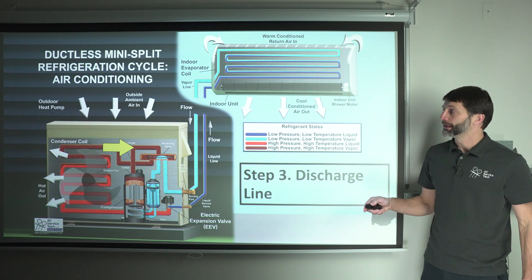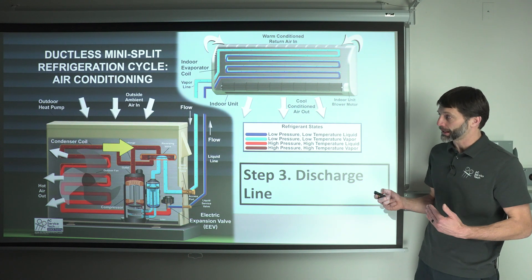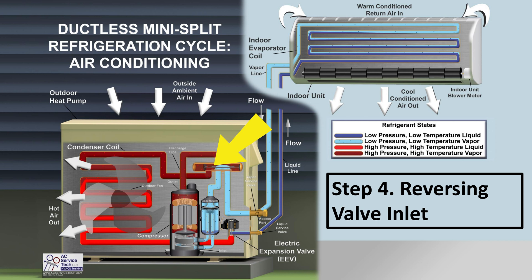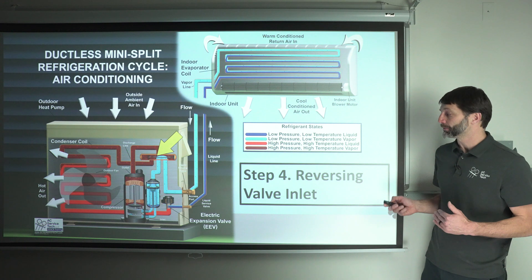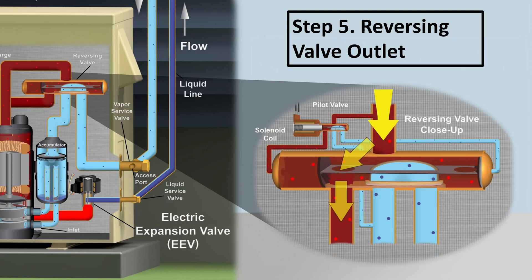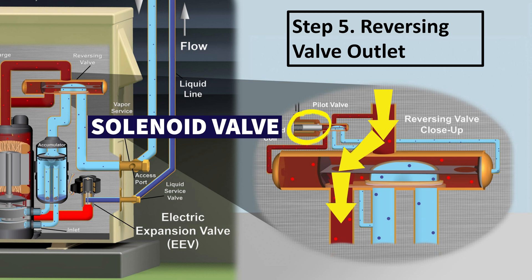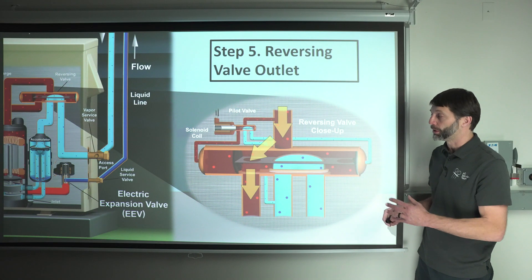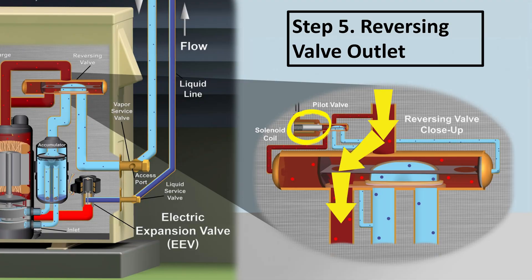The hot discharge gas travels into the reversing valve and remains unchanged — it's still traveling through the body of the reversing valve. That's step four, the reversing valve inlet. The vapor refrigerant travels through completely unaffected. In this case, the solenoid valve on the reversing valve is non-powered. That little iron core is being pushed over to the right by the spring pressure on the pilot solenoid valve.